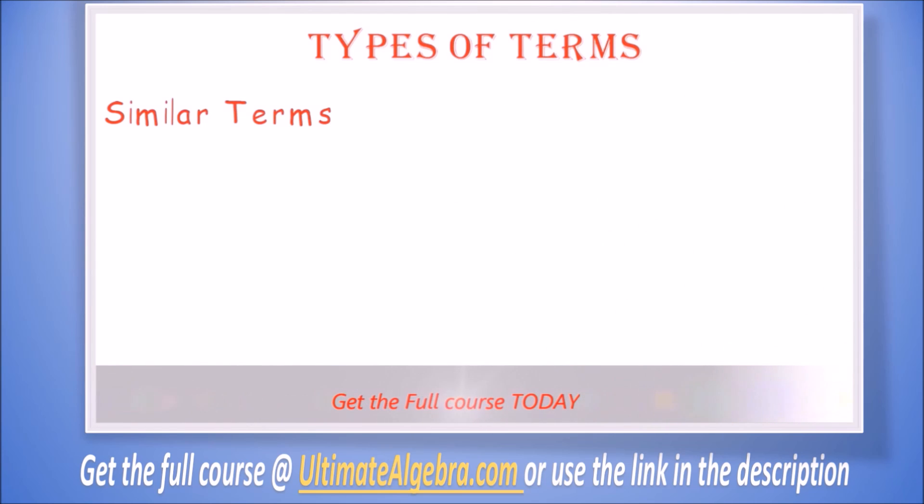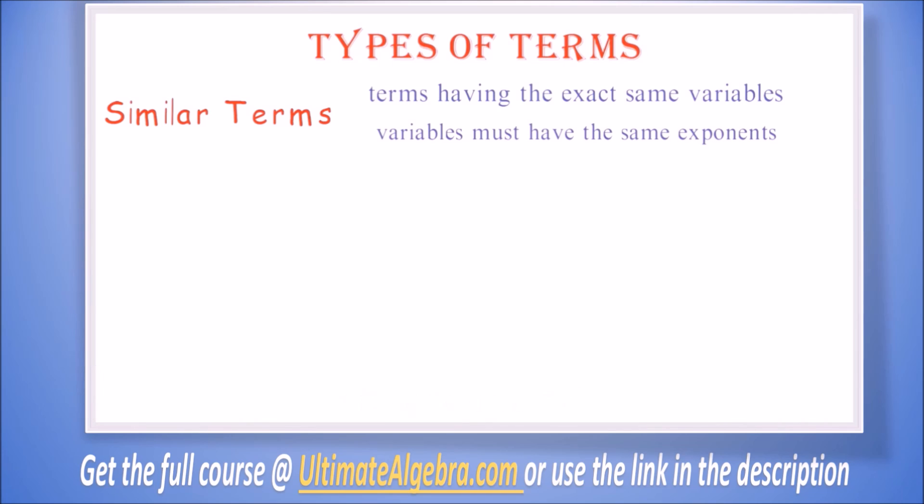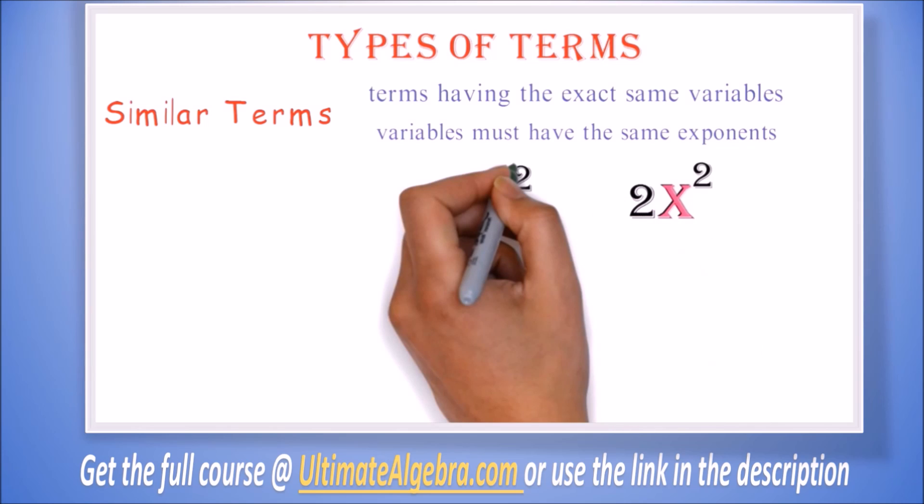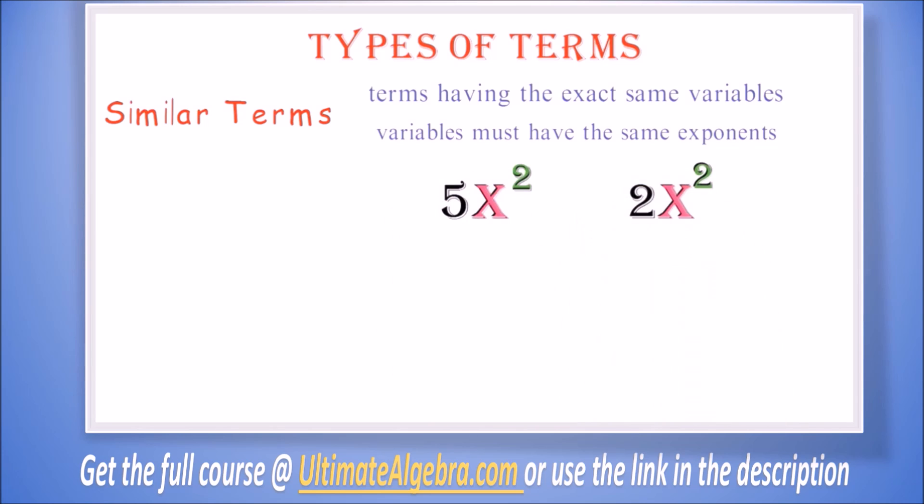Types of terms: Similar or like terms are terms having the exact same variables. These variables must have the same exponents. Remember, we said the variables are simply the letters. Example: when we look at 5x squared and 2x squared, we will notice that both have the letter x and the x has the same exponent too, so we can say that the terms are similar.